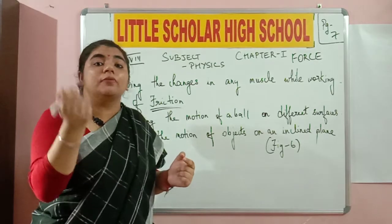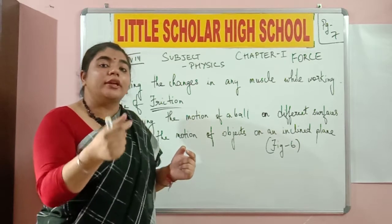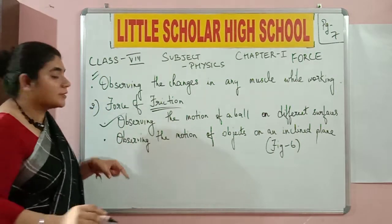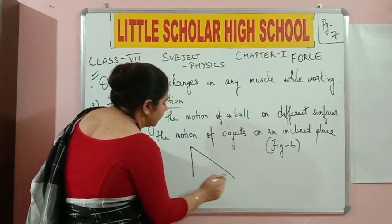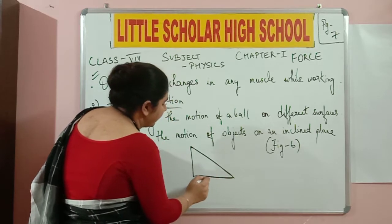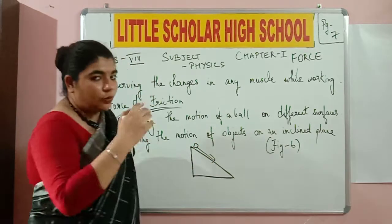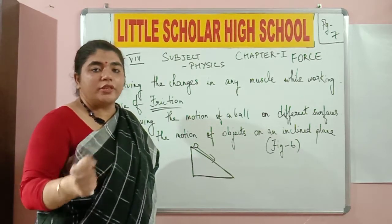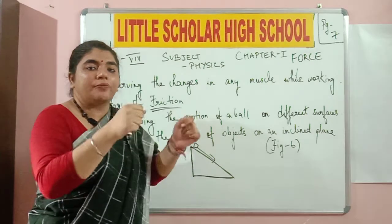The marble on the rough surface is going to stop before the marble moving on the smoother surface. The second point is observing the motion of objects on an inclined plane. An inclined plane is like a ramp — these are also used in hospitals where people on wheelchairs can't climb steps, so they use an inclined plane to move forward with the help of another person pushing them.